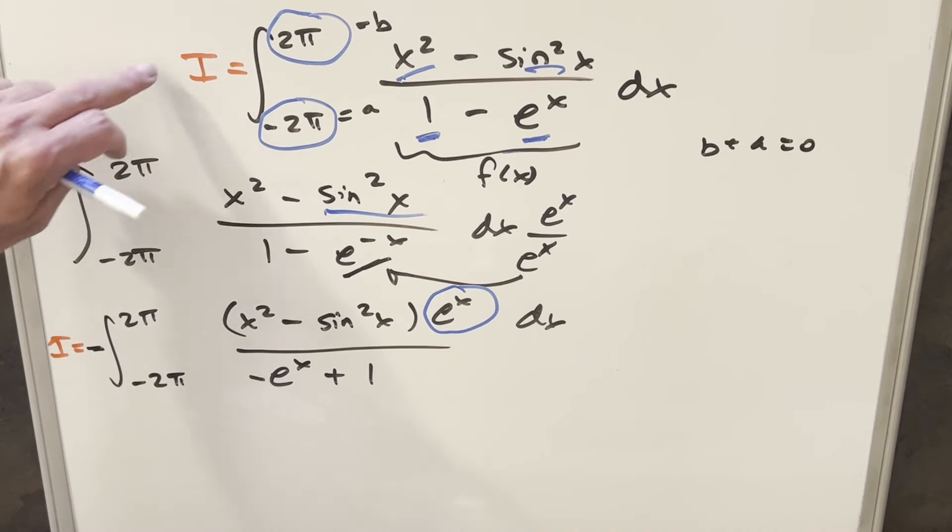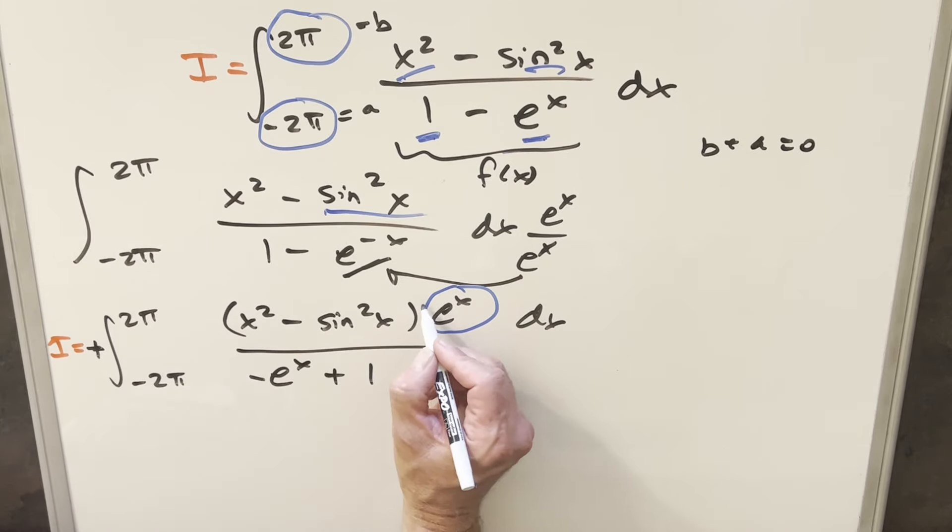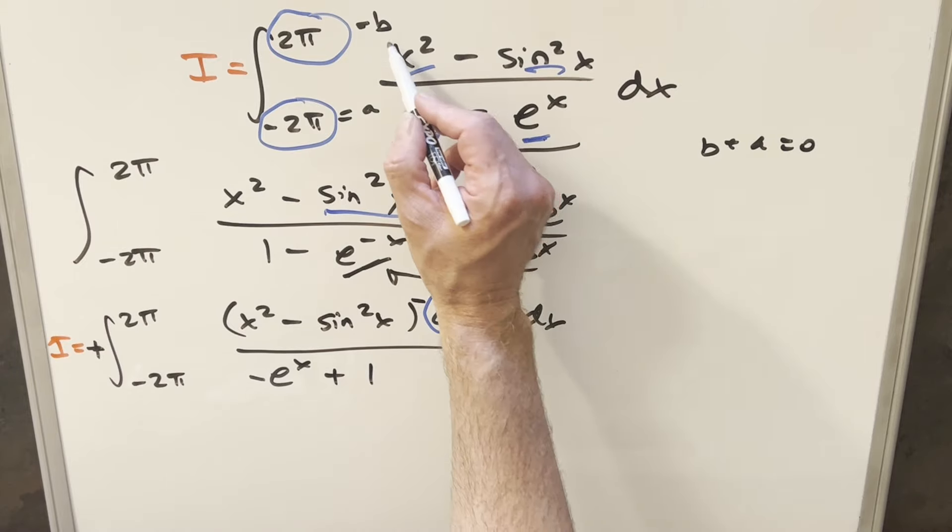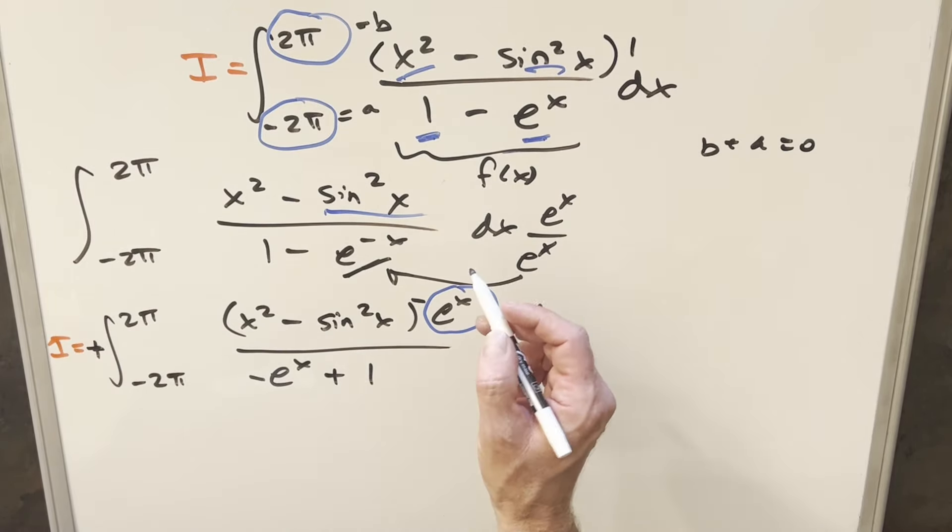So what I want to do now is add these two together. What I'm going to do first is actually, I should have just done this in the beginning, but let's put the minus sign, instead of having it up front, let's put the minus sign here on the -e^x. And then to make it clear, on this one, we'll have this. This is like just 1. So when we add them together, we have the same denominator.